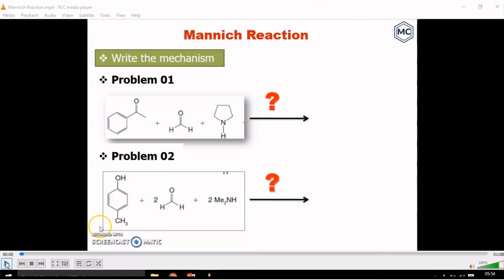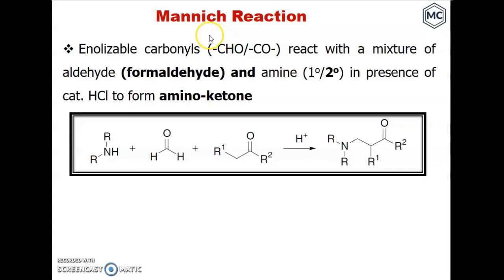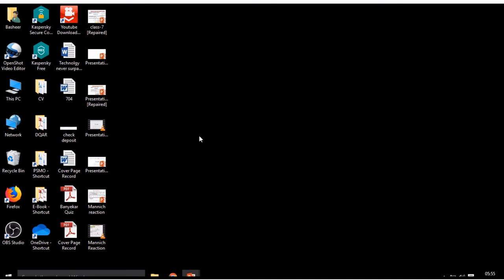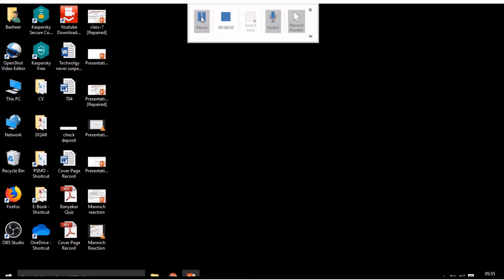Now I am going to play that recorded video. The Mannich reaction is an alpha-substituted carbonyl — it reacts with a mixture of aldehyde and amine in the presence of a catalytic amount of acid to form an amino ketone. This is the general scheme. You can see that it has very good quality — the video and audio clarity is very good.